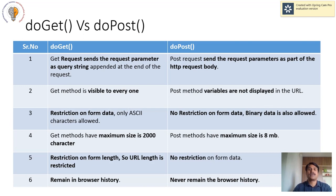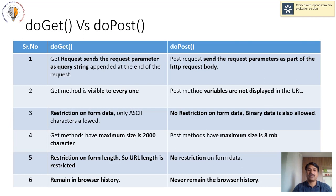As far as restrictions are concerned, with the doGet method you have restrictions on form data — you have to use only ASCII characters. But this restriction is not there with doPost; there is no restriction on the data, and you can even send file data. With doPost, the data never remains in the browser history.